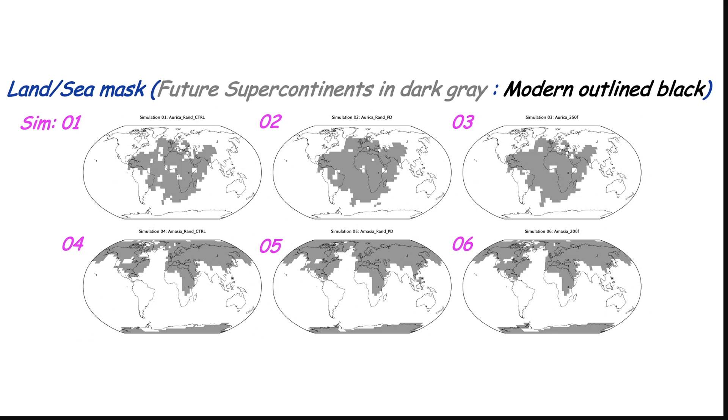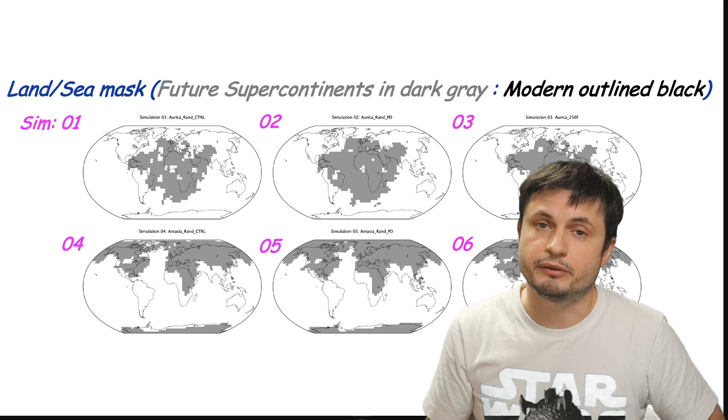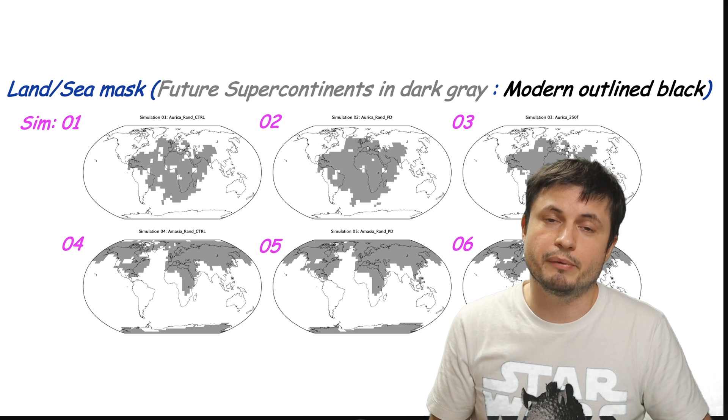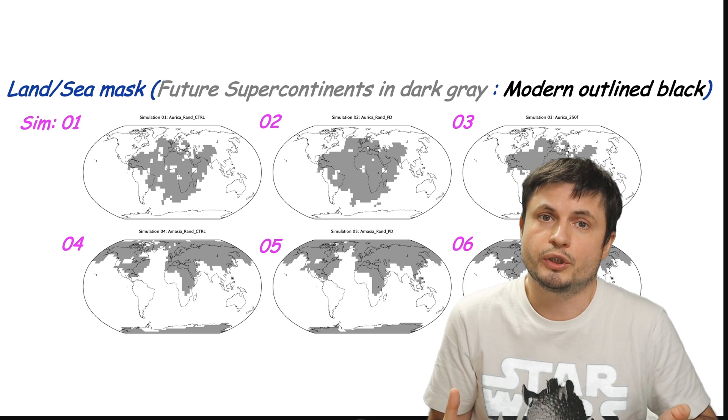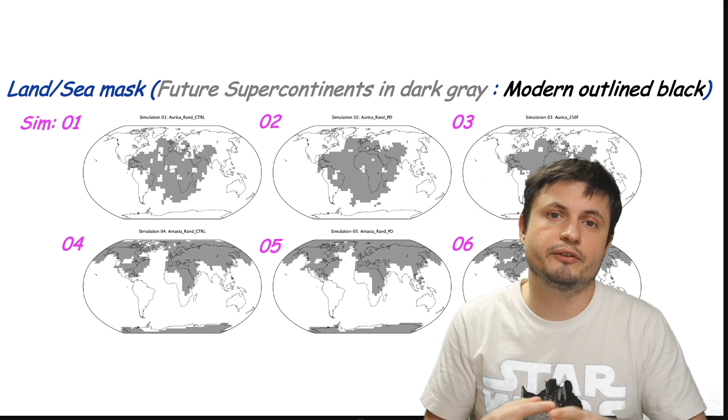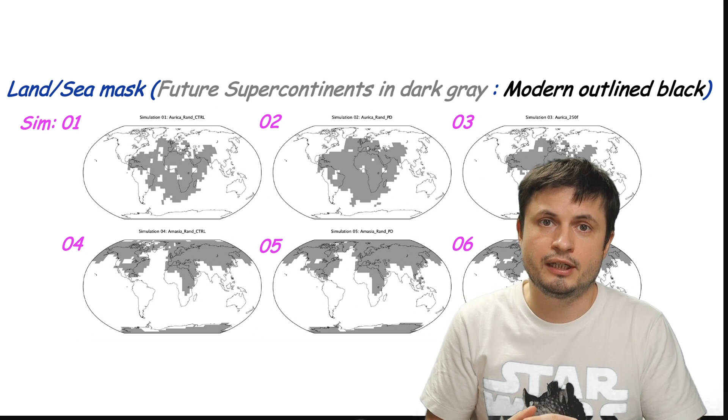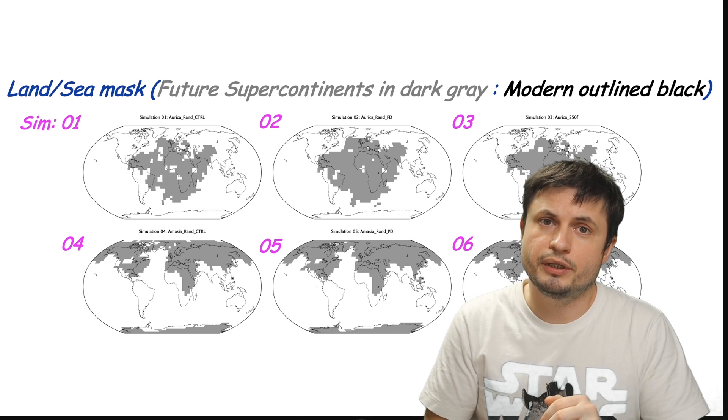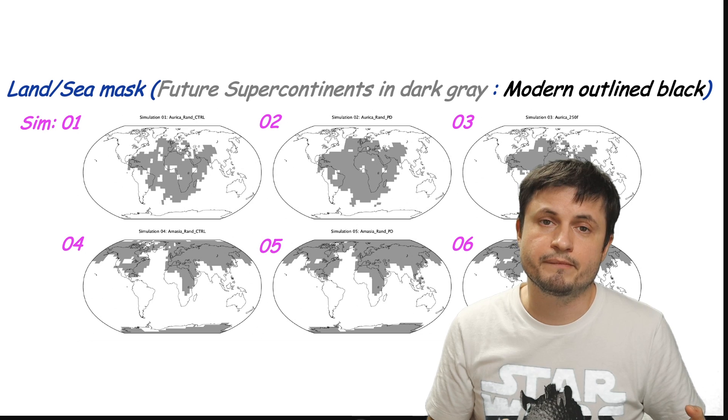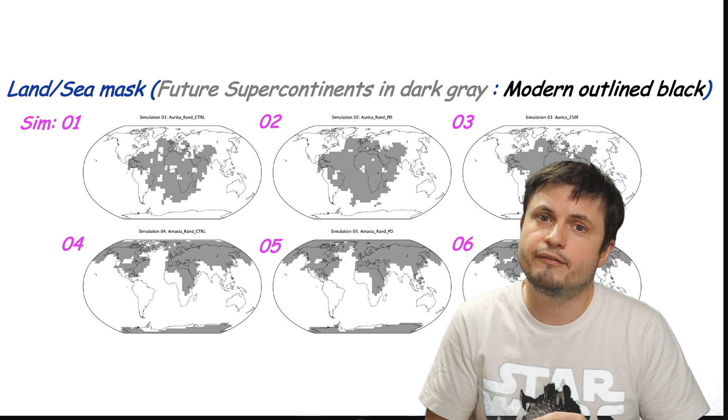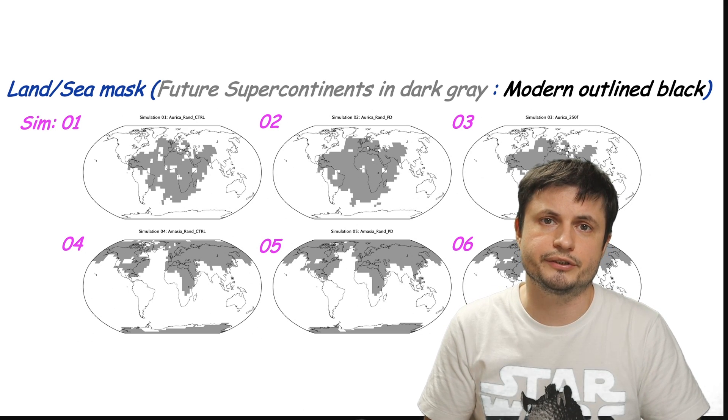But which of these scenarios is going to play out and which of these continental configuration earth is going to have is not a question we can answer right now. These are just predictions and possible suggestions to what earth might become in the future, but for all we know, it might actually take a completely different route and become something else. However, we do think that at some point there is going to be another supercontinent simply because they were cyclical so far and repeated every 300 to 400 million years.